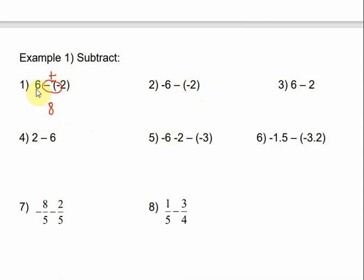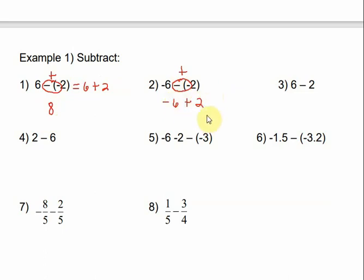Remember, this is the same as 6 plus 2. If the signs are the same, we add and use the sign of the bigger number. Number 2: change the two touching signs — they're the same, so it's a plus, giving negative 6 plus 2. The signs are now different, so I subtract and get 4, but my answer is negative 4 because the bigger number is negative.